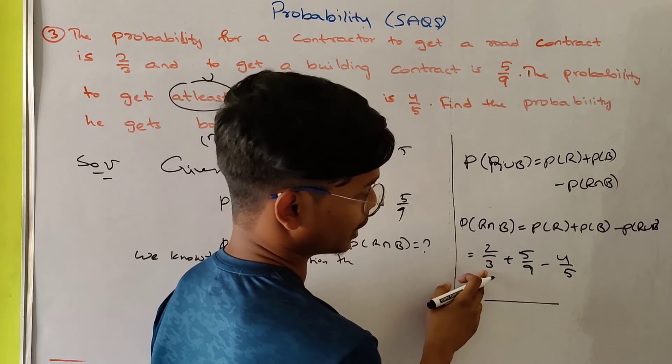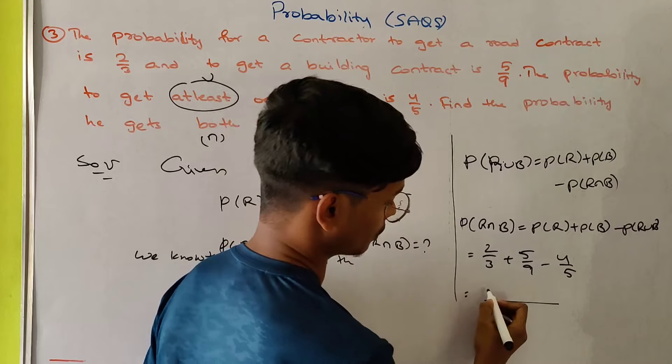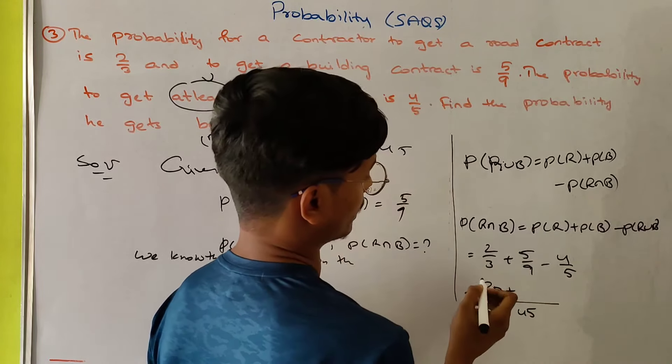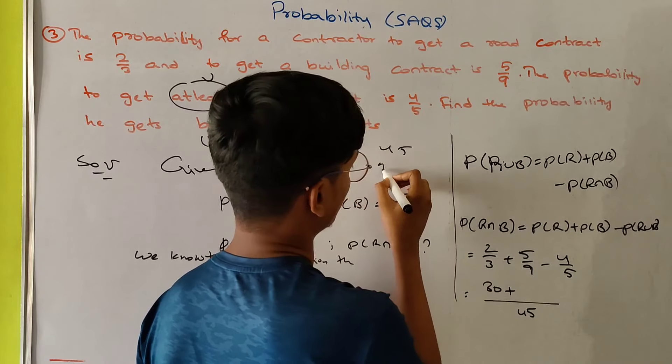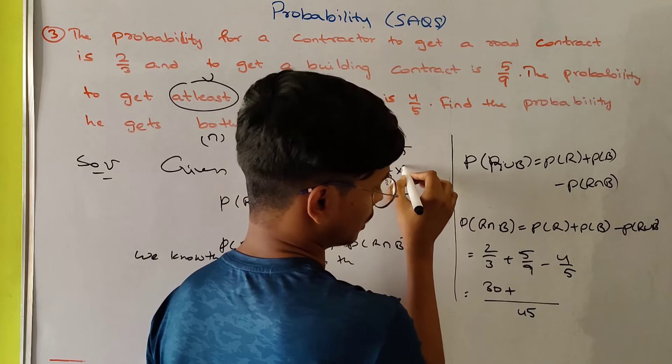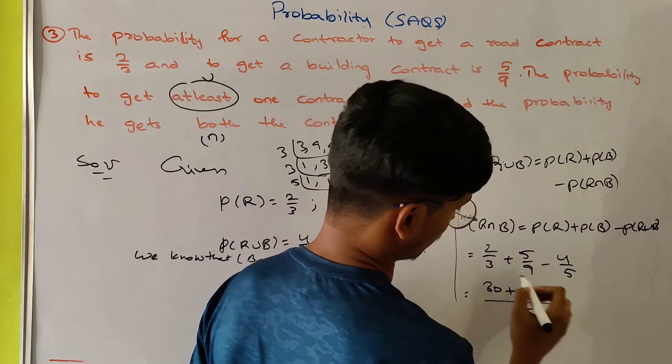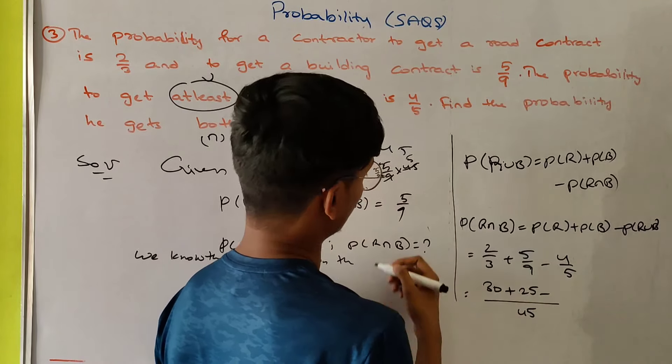2 by 3 divided by 45 and 15 is equal to 30 plus 5 by 9 minus 4 by 9. 45, 9, 1, 1 and 5, 25 minus 45.